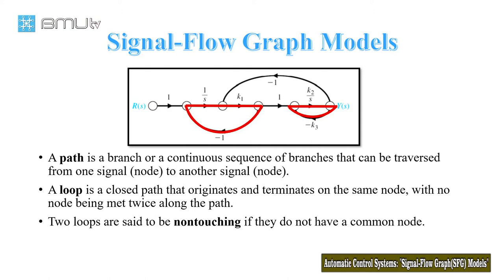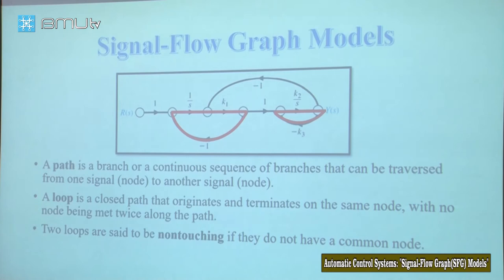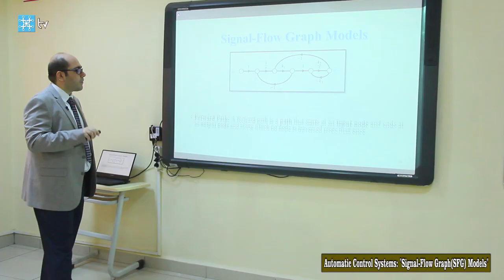Suppose here is our first loop, and this is our second loop. As you see, these two loops are non-touching because they don't have any common node. In this form we can say that these two loops are non-touching.